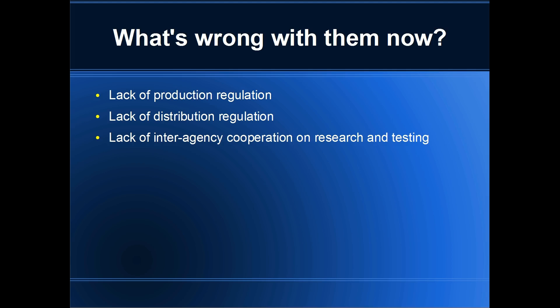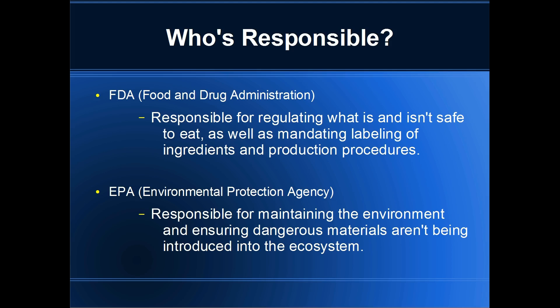So what's wrong with GMOs? We don't have strong regulation on production or distribution, and there isn't a lot of interagency cooperation in terms of research and testing. Essentially it's a free-for-all. Two big names come to mind: the FDA, the Food and Drug Administration, responsible for regulating what is safe to eat and enforcing mandates on labeling and production procedures; and the EPA, the Environmental Protection Agency, responsible for maintaining the environment and ensuring dangerous materials aren't introduced into the ecosystem.